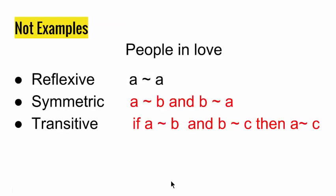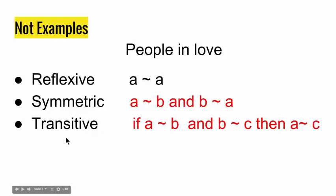Let me give you a few examples of sets that don't have equivalence relations. Consider people who are in love. We assume the elements are reflexive — everyone is in love with himself. But they are not symmetric: if A is in love with B, B may not be in love with A. They are also not transitive: if A is in love with B and B is in love with C, A may not be in love with C. So people in love is not an equivalence relation.